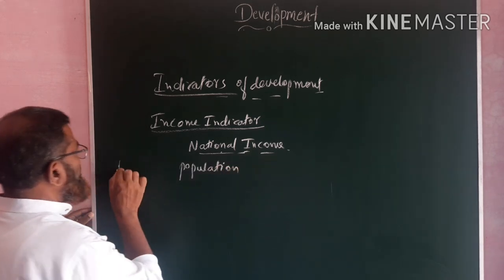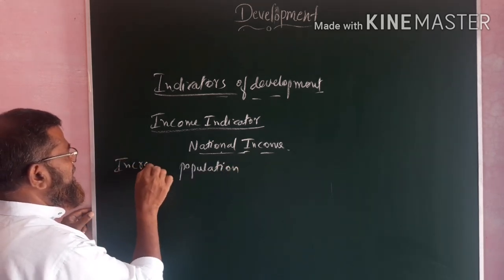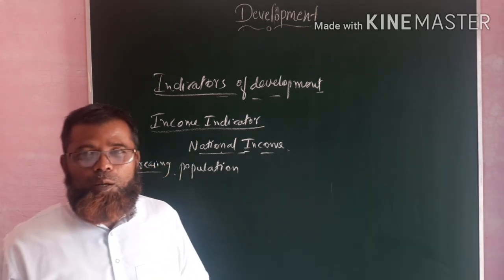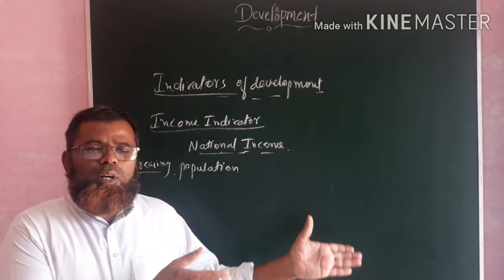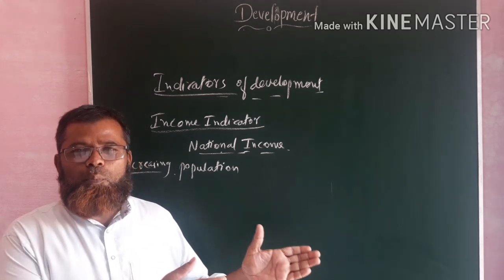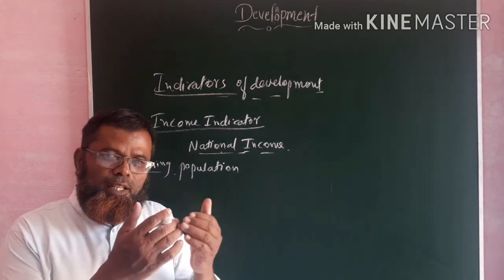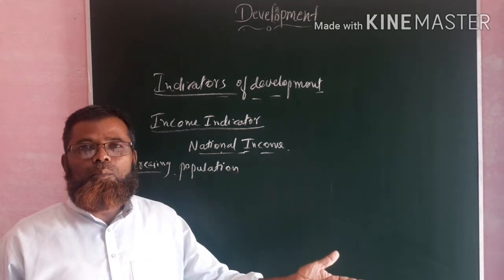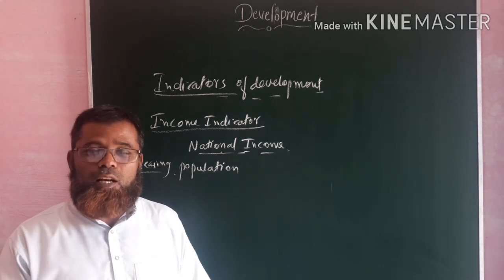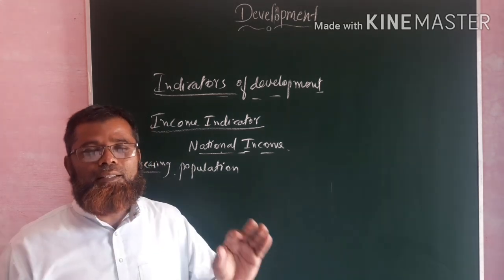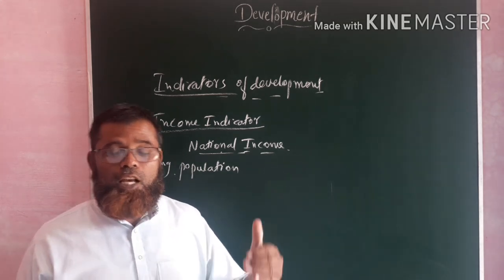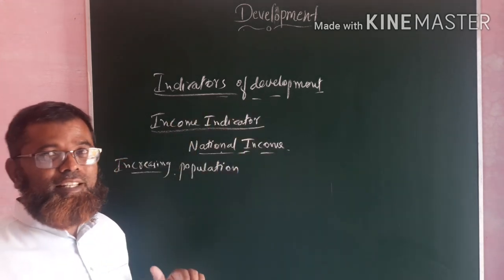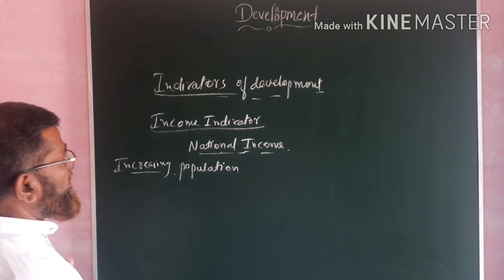Increasing population will not be favorable for development. For example, in the USA, Japan, Germany, and those countries, the national income is increasing but the population is not increasing at a faster rate. Because of that reason, those countries are considered developed countries. But in India, national income is increasing, but more than income, the population is increasing.